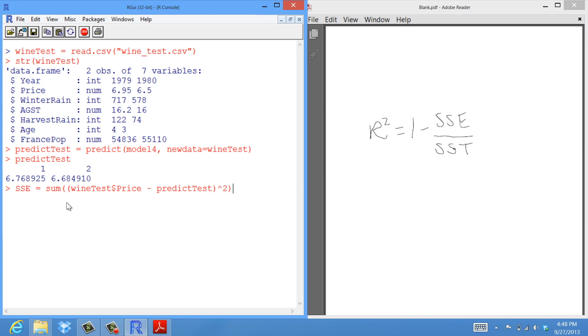The total sum of squares equals the sum, again, of the actual values, wineTest$Price, and the difference between the mean of the prices on the training set, which is our baseline model. We square these differences and add them up.